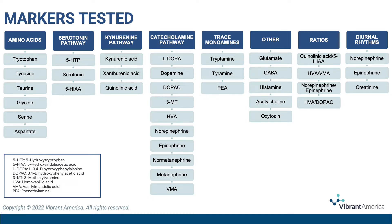Vibrant includes diurnal rhythms for norepinephrine, epinephrine, and creatinine. These diagrams include four points of reference based on the urine collection times to assess the variability of these markers at different points throughout the day.